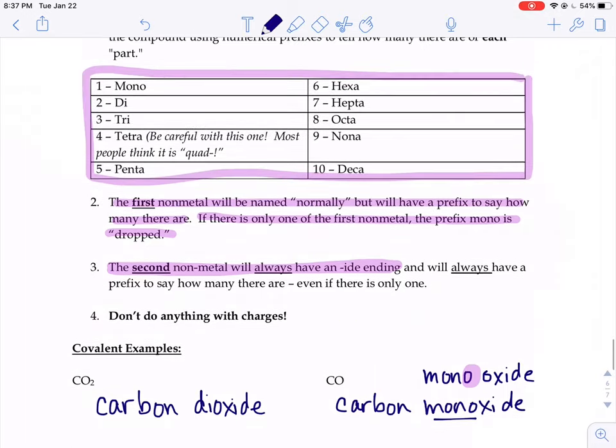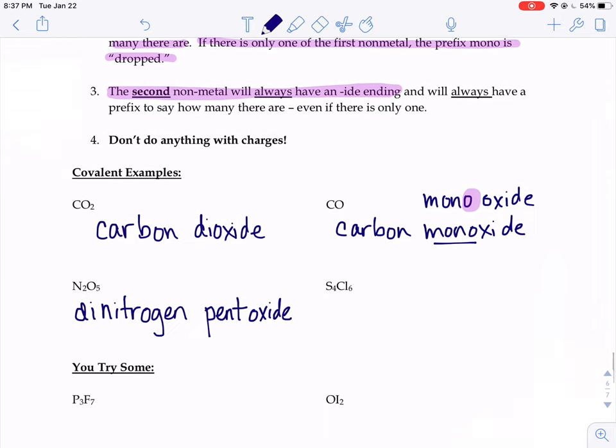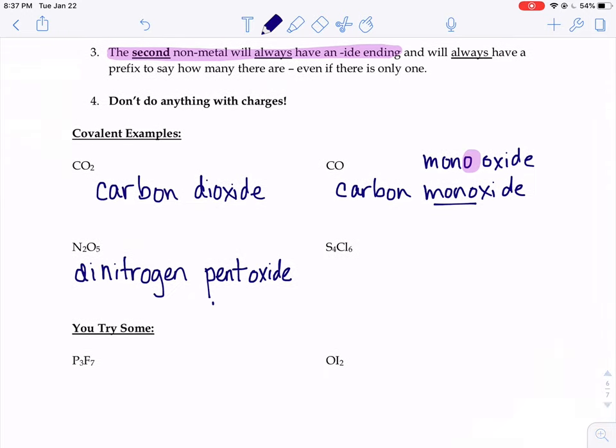Now, up here, five, it says penta, and here I just wrote pent. So, if you wrote penta oxide, I would not mark it wrong, but they drop that A just because it kind of sounds funny to have that double vowel sound back to back. Sounds a little fancier to say pentoxide instead of penta oxide.